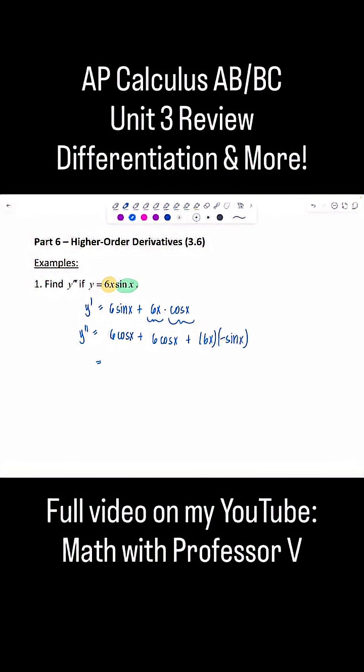See how these are like terms? Oh yeah. So make this 12 cosine x minus 6x sine x.